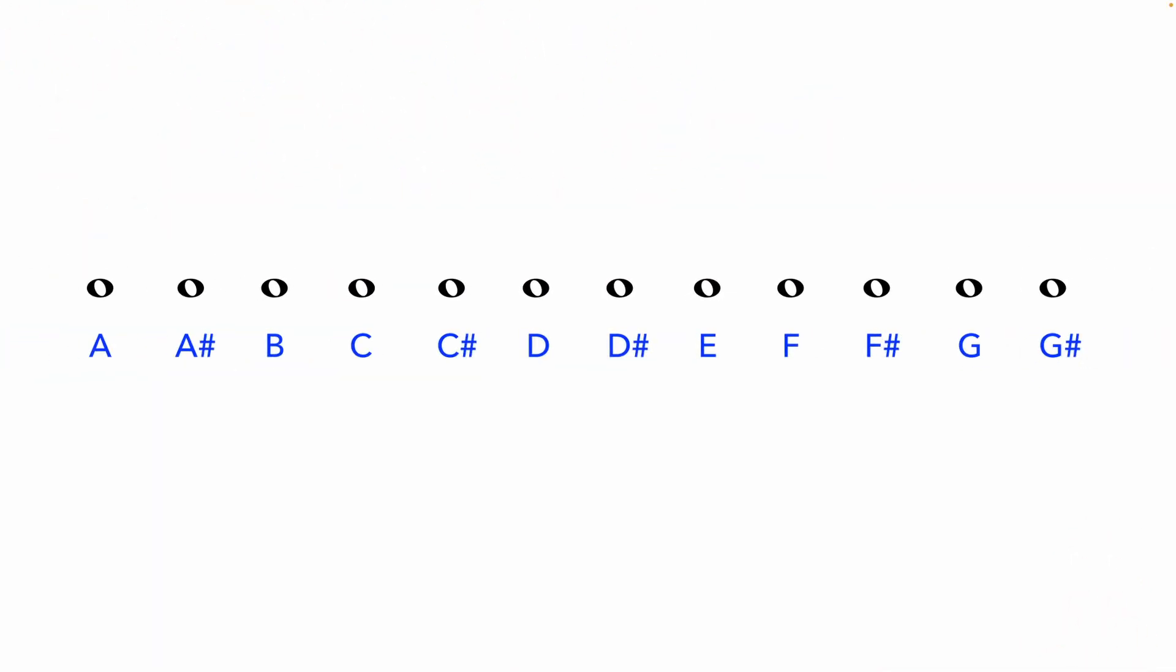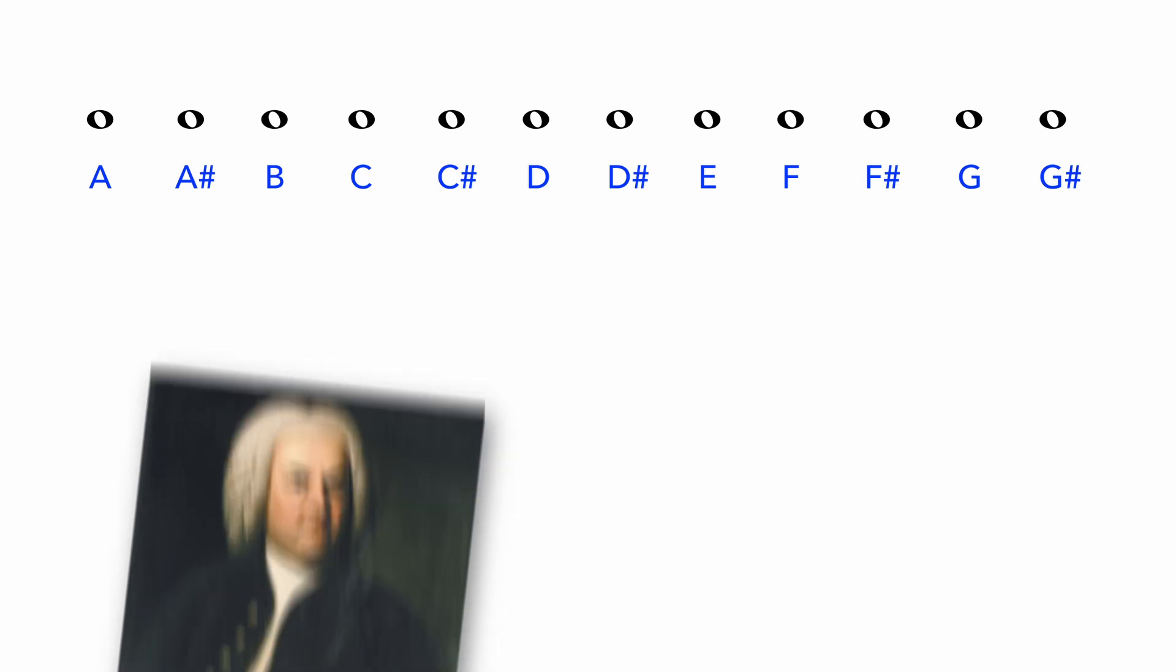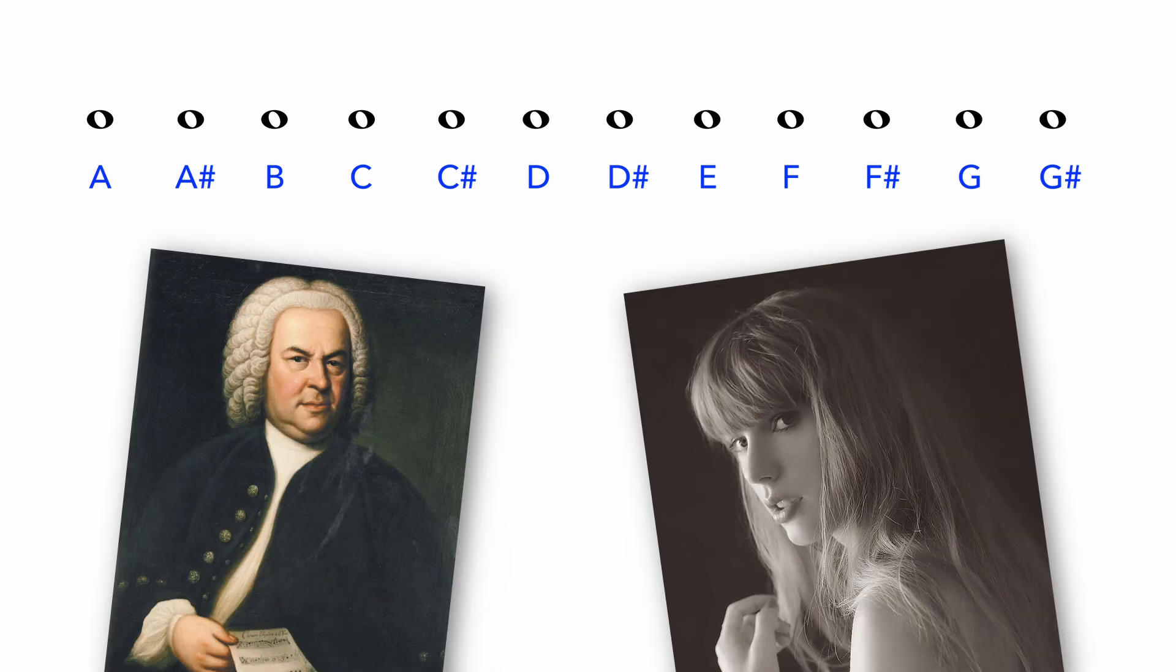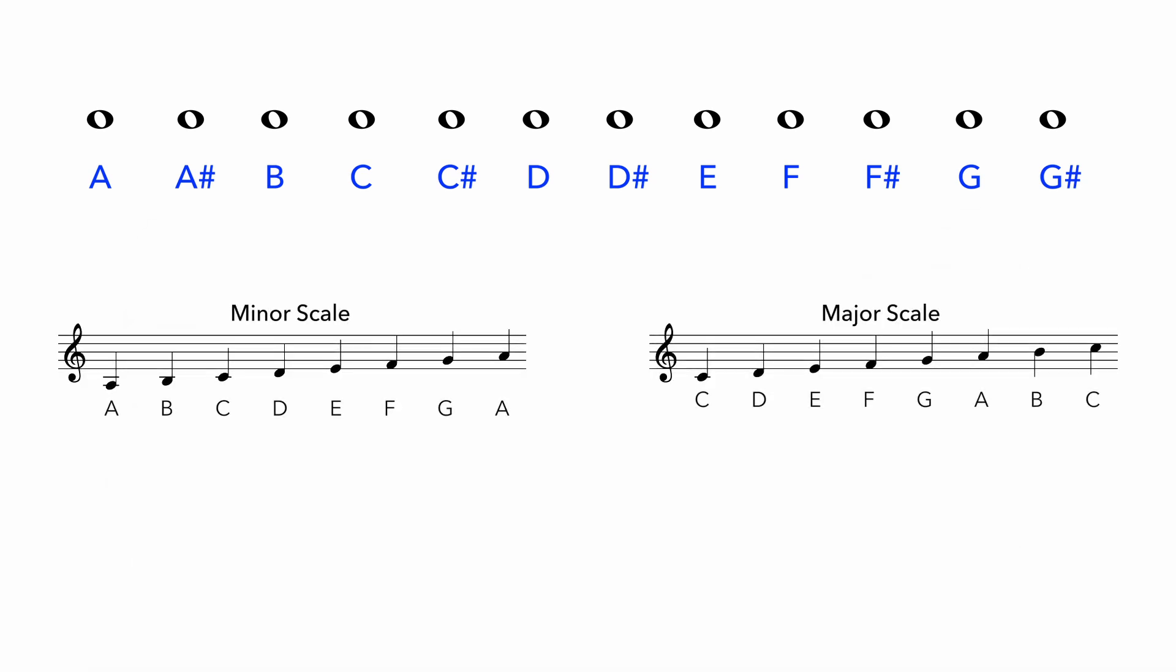although our full harmonic system consists of 12 notes, the vast majority of Western music, from classical to pop, is based on diatonic 7-note scales.